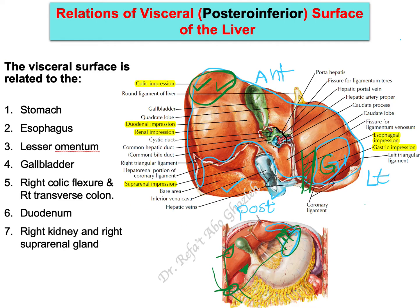Moving a little more posteriorly, you can see the right kidney here. It creates an impression on the visceral surface of the liver, posterior to the right colic flexure. This is called the renal impression.